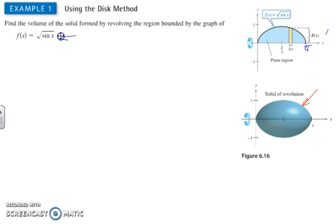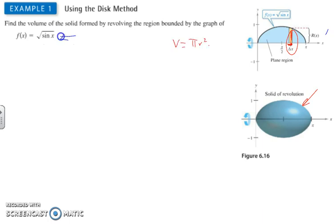Each one of these rectangles, as it spins around, would form a circle around this x-axis where the radius of that circle would be the length from the axis to the curve, and the thickness of that circle to form the disk would be dx.